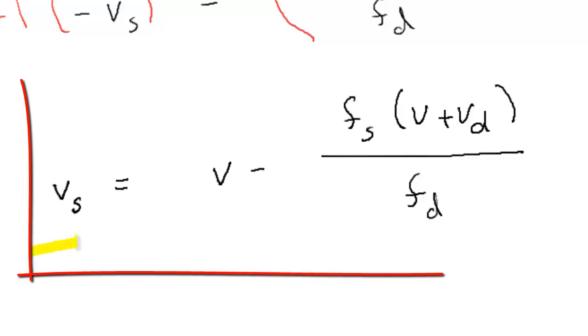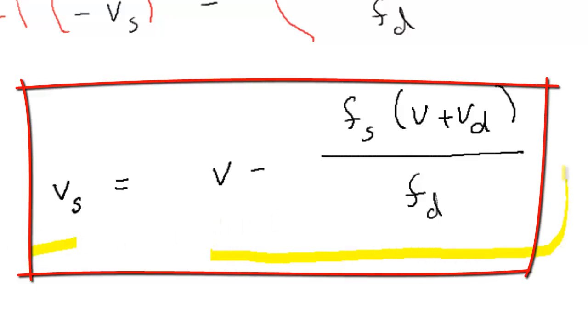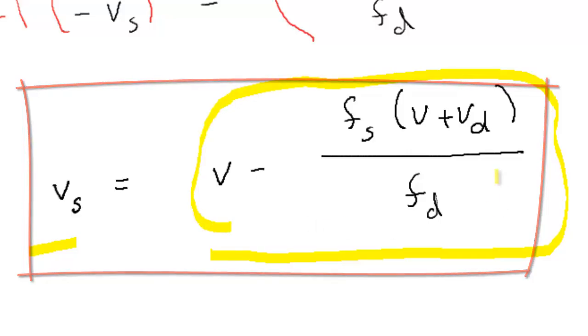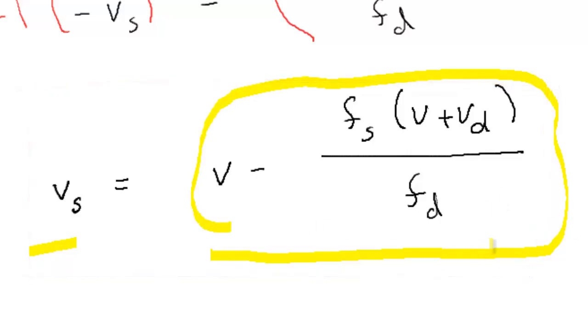VS equals V minus this gigantic big fellow. F sub S times V plus VD divided by F sub D. And that ends our Algebra Review. Thank you so much for your time.